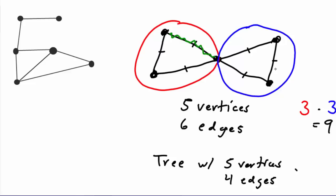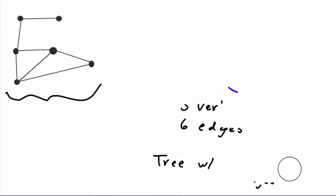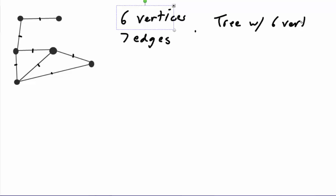We want to use this same reasoning to solve the main problem. Our given graph has six vertices and seven edges. If we want a spanning tree on those six vertices, we need five edges, so we need to delete two edges. Similar to before, the graph is not a tree because it has circuits, so we want to delete edges to destroy circuits while keeping the graph connected.